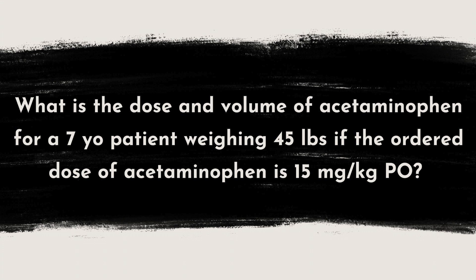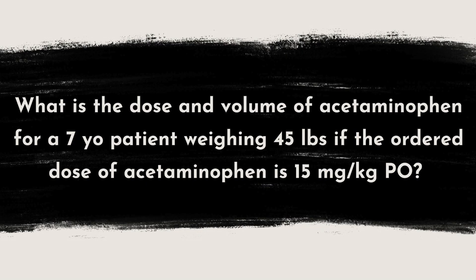Let's bring these ideas together by working through an example problem. We are being asked to find both the dose and the volume of the dose — remember, the volume is the volumetric amount we will actually administer to the patient. To find the dose, we need to know the weight-based dosing range. The provider has ordered 15 milligrams of acetaminophen per kilogram of patient weight. We should immediately realize that the patient's weight was given in pounds while the dose is given per kilogram.